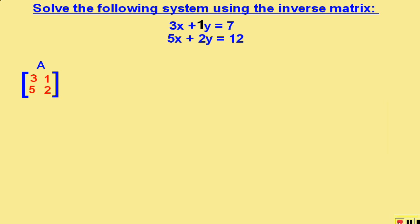We now need to find matrix A's inverse. We do so by first finding the value of its determinant, which in this case is 1.